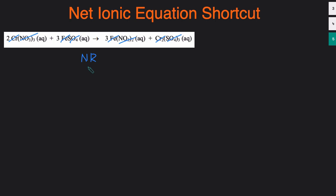That's the shortcut for writing net ionic reactions. Step one: balance the molecular equation. Step two: cross out any ions that have the same states on both sides. Step three: carry down the things you didn't cross out. Step four: add the charges to the aqueous ions.